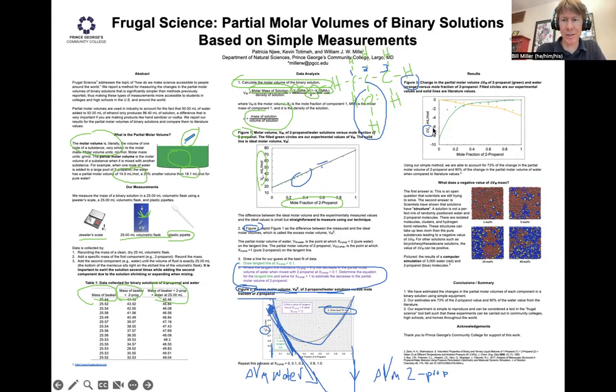In figure 3, we've got the change in the molar volume. These are decreases in molar volume. That's why we've got negative numbers in there. So we're looking at the mole fraction of 2-propanol. And when we do that, we see that our data is the circle, the green is 2-propanol, and the orange is water. And the solid lines are actual literature values.